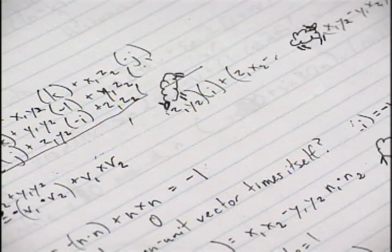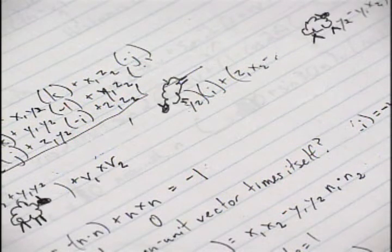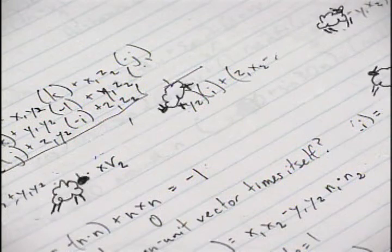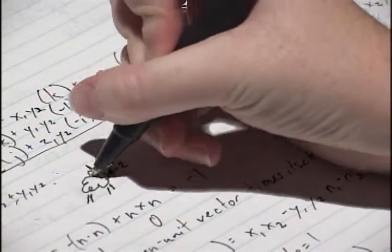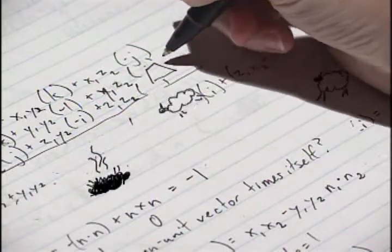But the combination of different unit vectors, such as i and j, will yield the other unit vector. So i and j yields k.